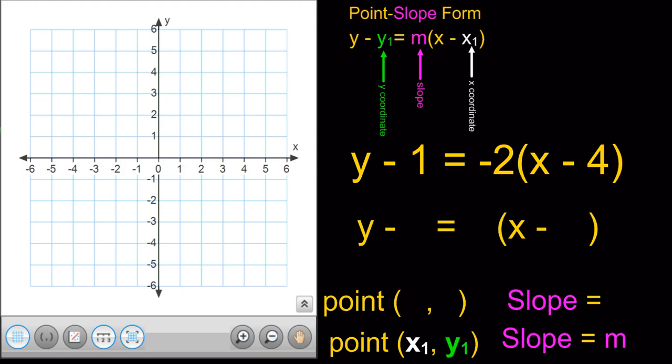And when you're given an equation like the one we have here, y minus 1 equals negative 2 times the quantity of x minus 4, we're simply going to take these numbers and we're going to plug them in. So, where we have y minus 1, that is going to be our y coordinate, or the second number in your ordered pair.